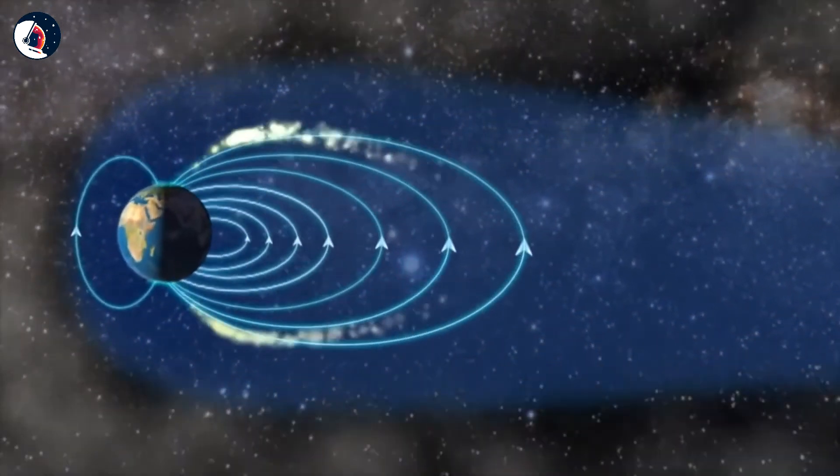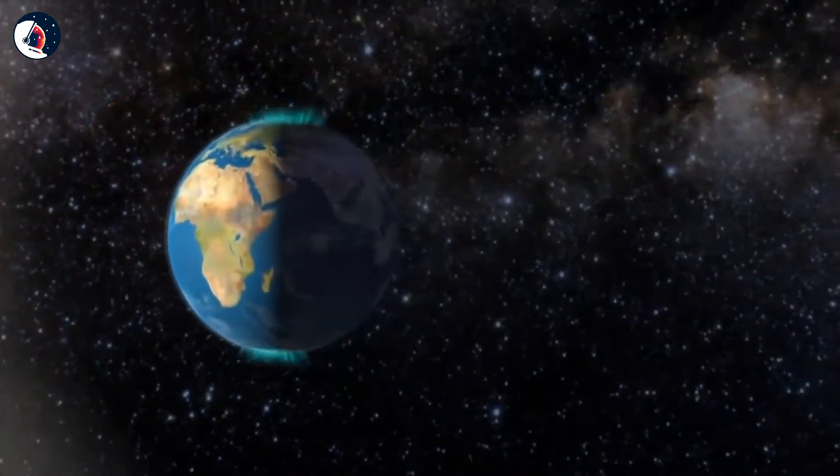The magnetic fields stretch further back and couple together. The magnetic rubber band breaks, and gas from the solar storm streams along the magnetic lines towards the poles on the night side. This is the nighttime aurora.